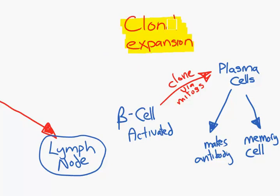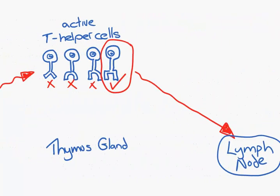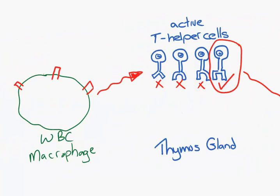Now back at the beginning, if we go back where we were selecting which T helper cell fitted, was called clonal selection, another term the IB likes us to use. Now these two processes, clonal selection to select the right clone and then clonal expansion to make many of them, are what makes up antibody production.